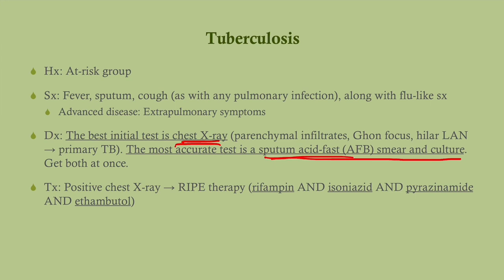If they have a positive chest x-ray, your best next step is to initiate RIPE therapy. So if you've got a positive smear you are going to initiate RIPE therapy. That's rifampin, isoniazid, pyrazinamide, and ethambutol.